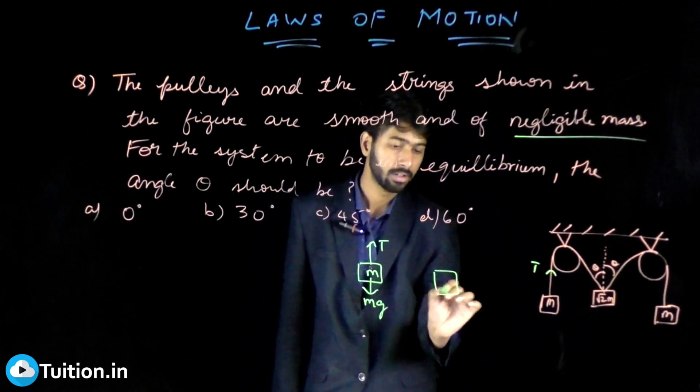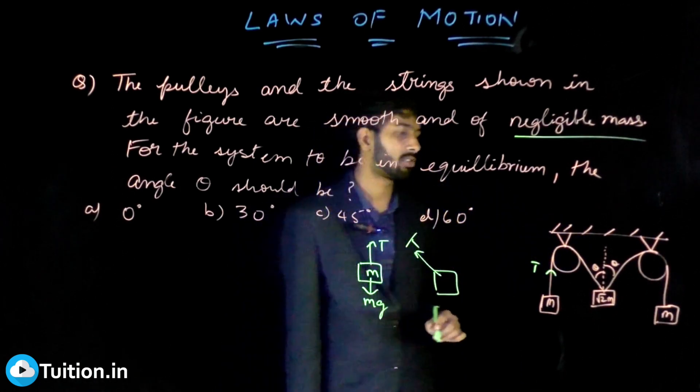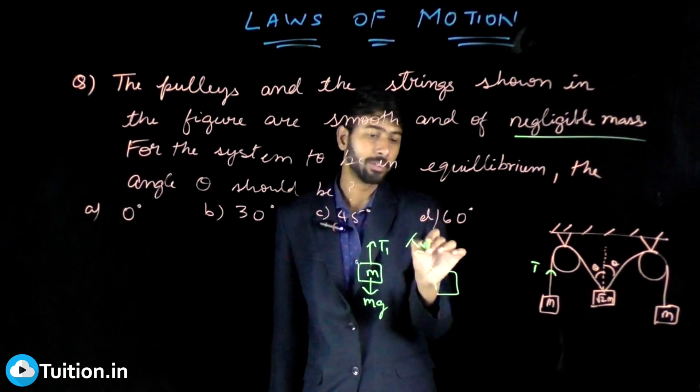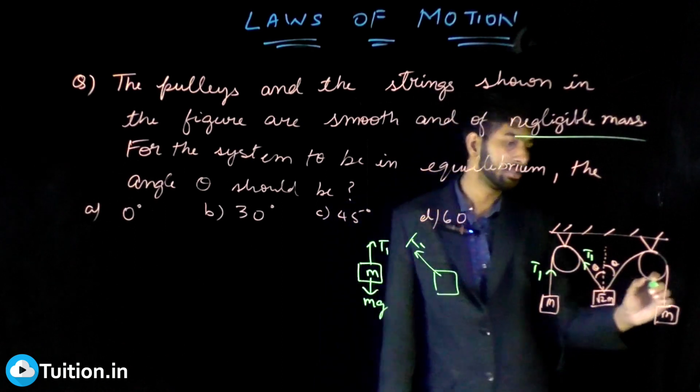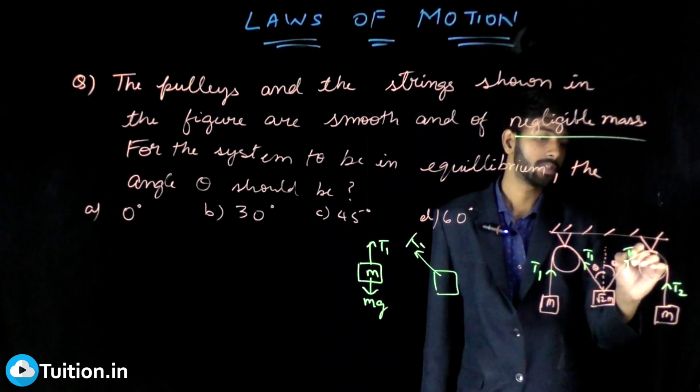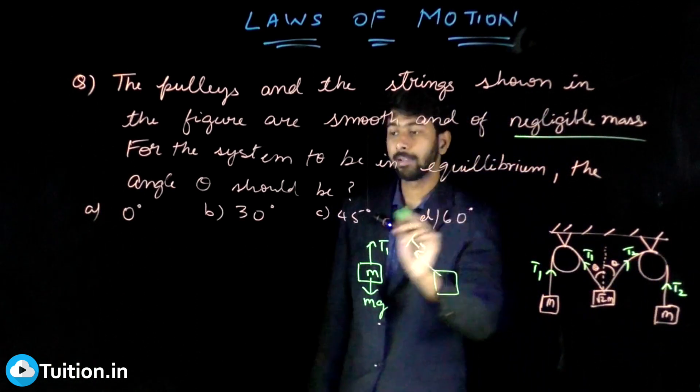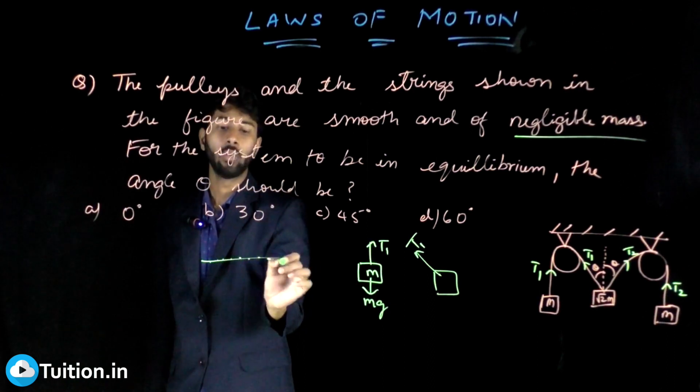In fact, let me take this as T1 because this string is the same, it is T1. Let this tension here be T2 because the string is different, but this string is same. So if the string is same and it's an ideal string, then every point on the string will have the same tension. That's why this or this, both of them will have T2.